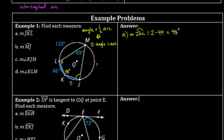So arc JKL is 98 degrees. That arc goes from L all the way to J through K. Since 46 degrees of that arc is already labeled, the remaining part is 98 − 46 = 52 degrees.